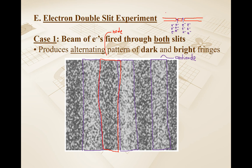You might wonder: how can an electron spread out over this entire area if it behaves like a particle? Maybe the interference pattern is due to electrons hitting each other and repelling to different positions on the screen, rather than diffraction. To test this, let's be more clever: fire electrons through the double slit one at a time, so there's absolutely no way two electrons can repel or hit each other.